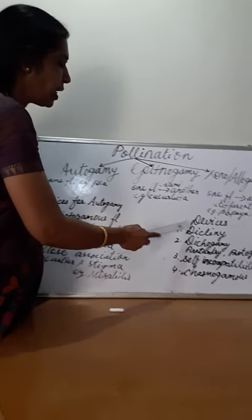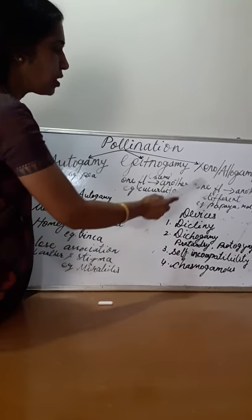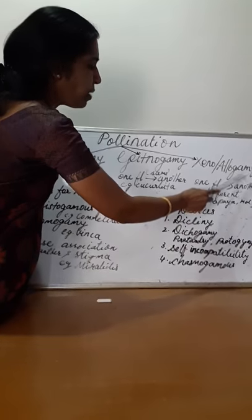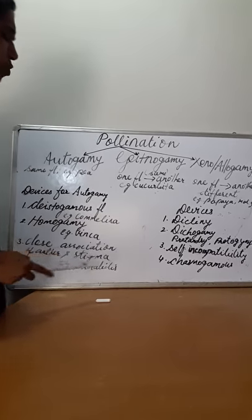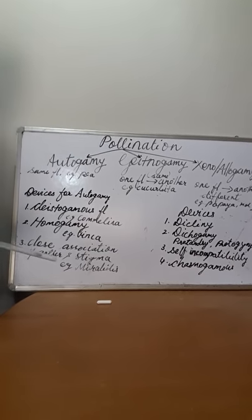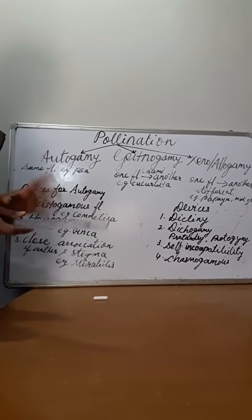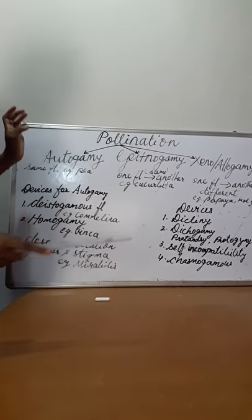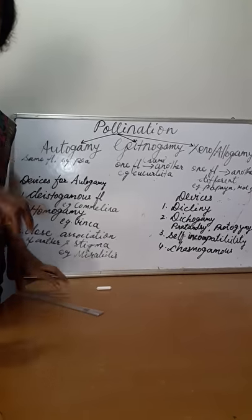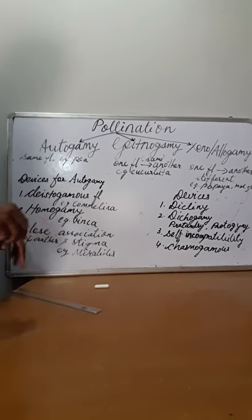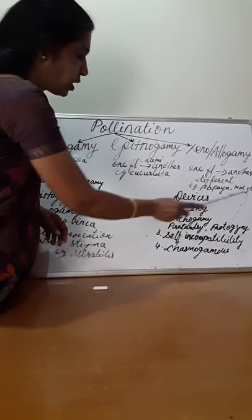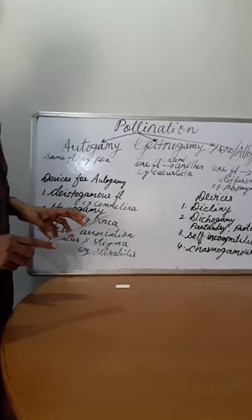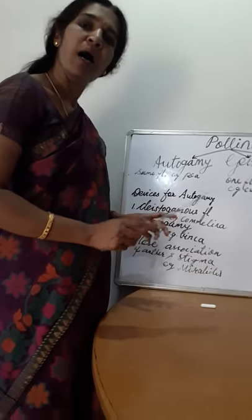Next, what are the devices for xenogamy or allogamy? Number one is dicliny. From 'di' meaning two — that is unisexual flowers. Either the plant will bear only male flowers or female flowers. That is dicliny, also referred to as unisexuality. The plant which bears only male or female flowers.